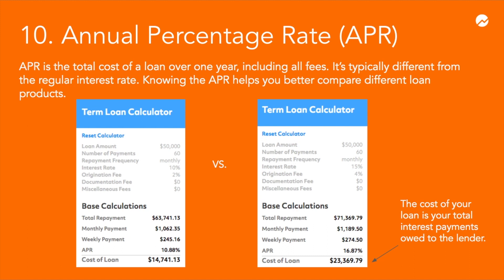Here's an example using Fundera's business loan calculators. If you have a $50,000 five-year loan with an interest rate of 10% and a 2% origination fee, your APR is 10.88% and you have to pay $14,741 in total interest payments to the lender. In contrast, if that loan has an interest rate of 15% and a 4% origination fee, the APR jumps up to nearly 17% and you have to pay $23,370 in total interest payments—an almost $10,000 difference. So make sure you ask the lender for APR when shopping for a business loan.